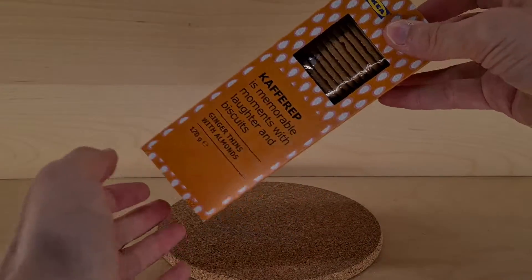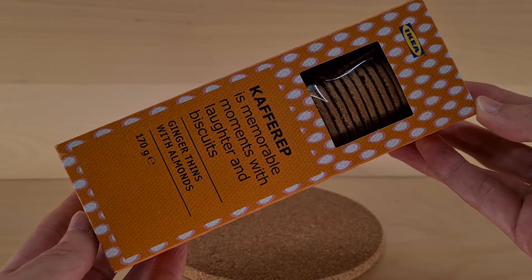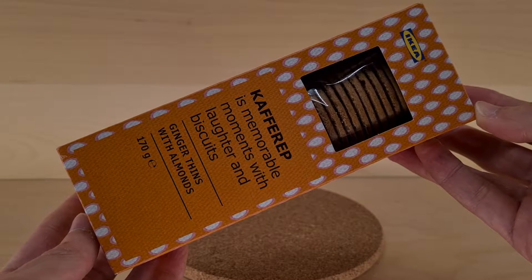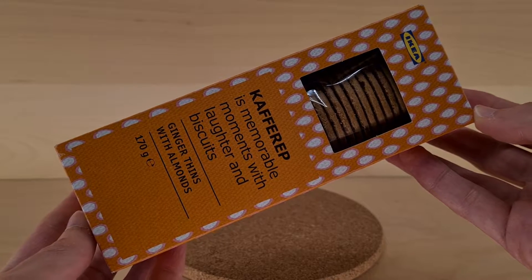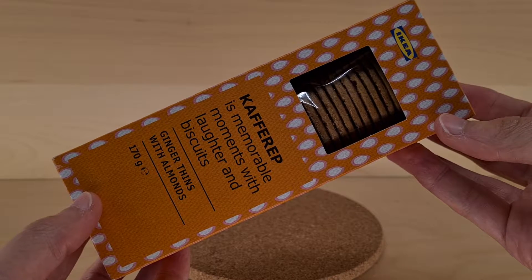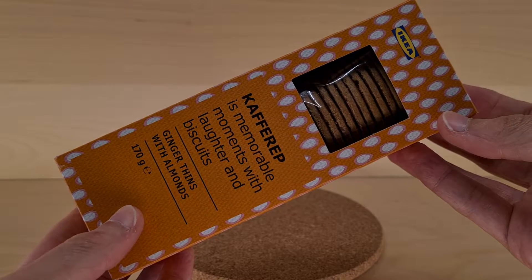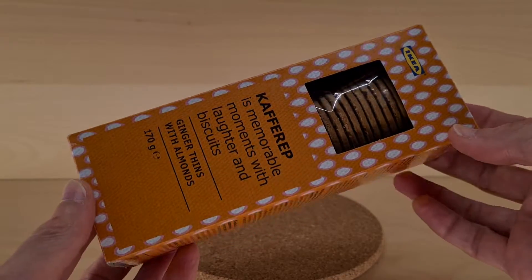We need to look at these IKEA food biscuits - these are Kafferep. Kafferep, that's how I'm going to say them. Ginger thins with almonds. I've had ginger thins before on a number of occasions. I'm not sure I've had any with almonds in them. I'll give them a try.